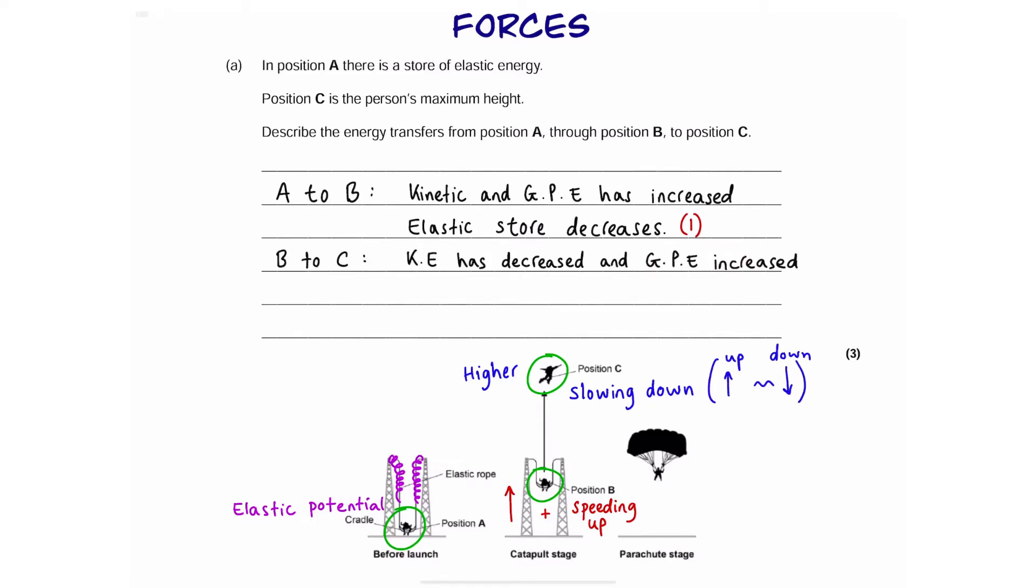So, from B to C, the kinetic energy has decreased because it's slowing down. And the gravitational potential energy has increased because it's going higher. That's our second mark.